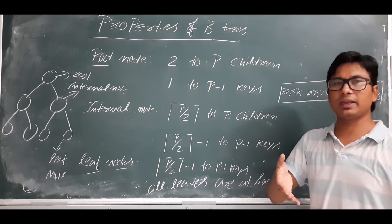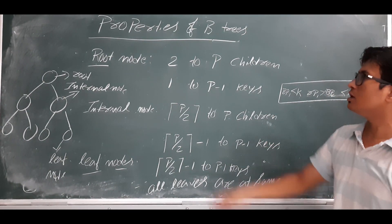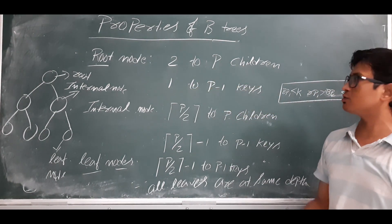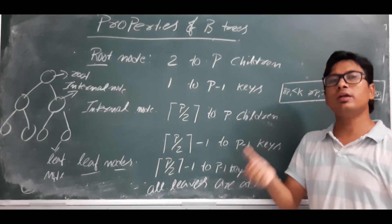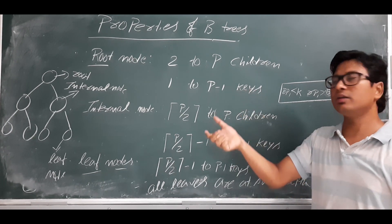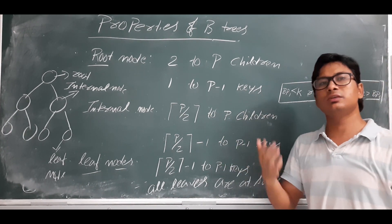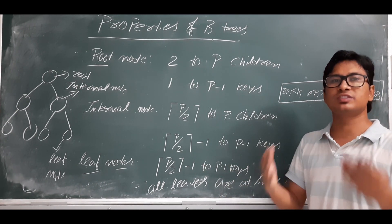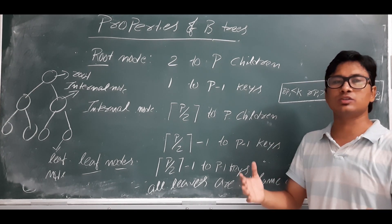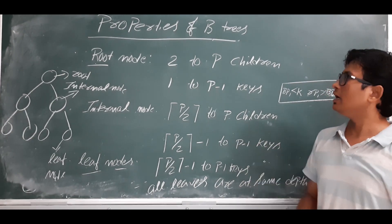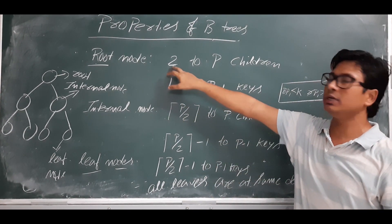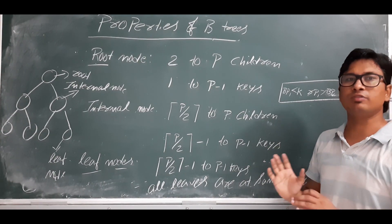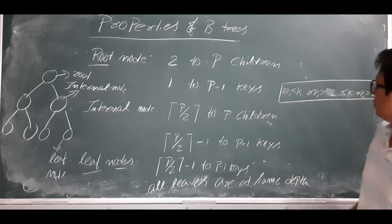Each node will have a certain number of children. The root node can have a minimum of two children and a maximum of p children, where p is the order of the B-tree. The order of a B-tree is the maximum number of children a node can have. So the root node can have minimum two children and maximum p children, where p is the order of the B-tree.